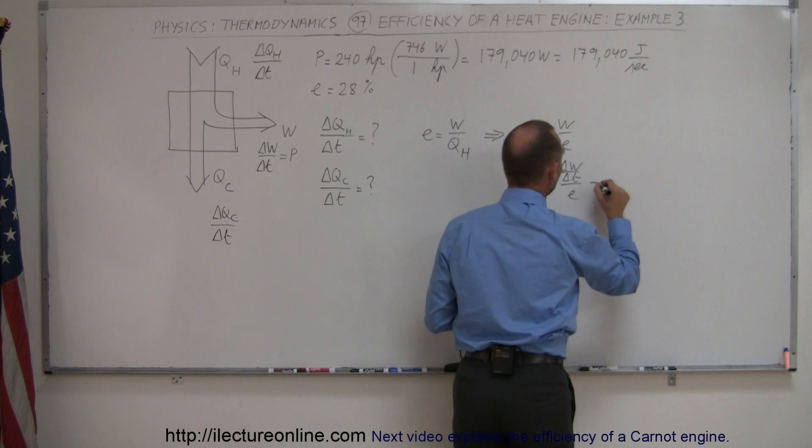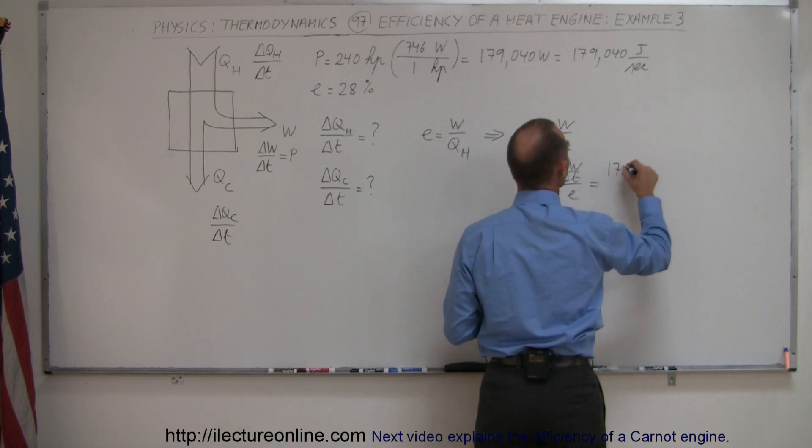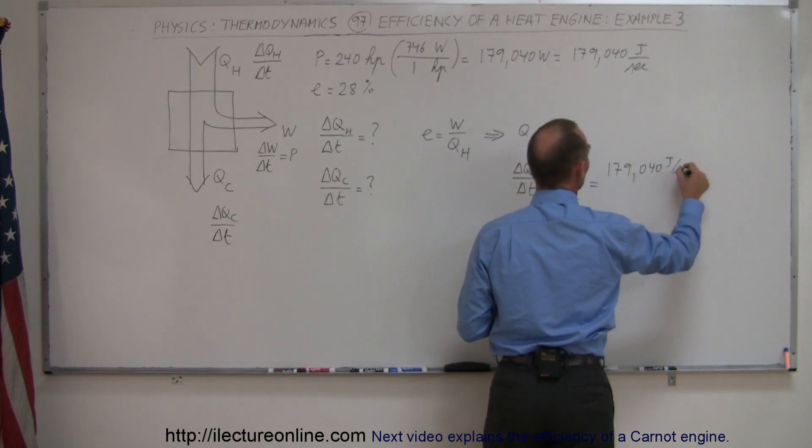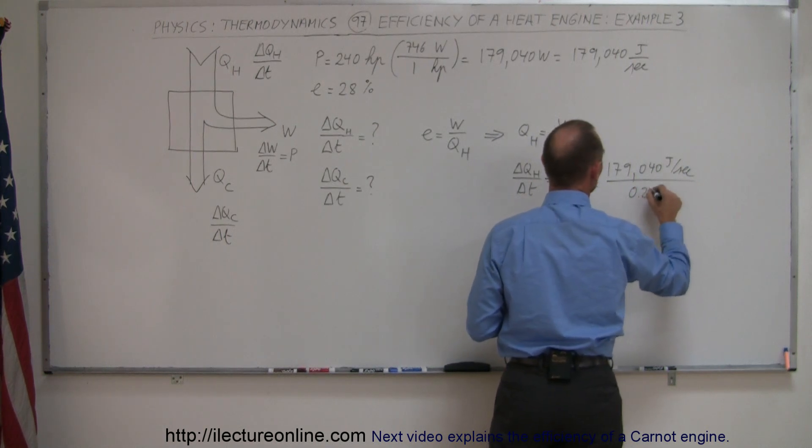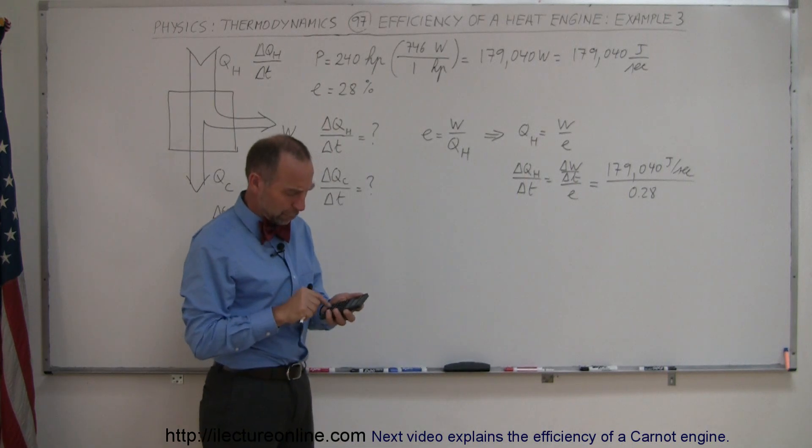Now we can go ahead and say this is equal to 179,040 joules per second, divided by the efficiency of 28%, which is 0.28. So divide this by 0.28,